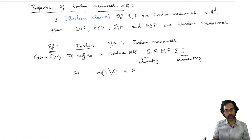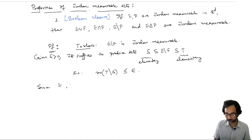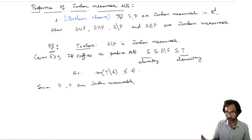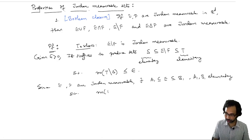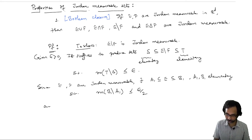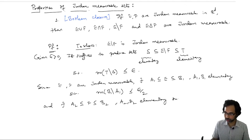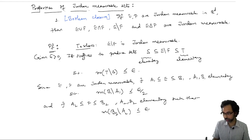Since E and F are Jordan measurable, there exist elementary sets A1, B1 with A1 ⊆ E ⊆ B1 such that the measure of B1 minus A1 is less than or equal to epsilon over 2. Similarly, for F there exist A2, B2 elementary such that the measure of B2 minus A2 is less than or equal to epsilon over 2.